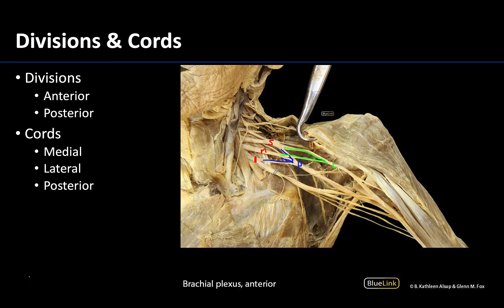When we get to the anterior division of the inferior trunk, it looks like a continuation of the inferior trunk, and that will form the medial cord — because recall the posterior division of the inferior trunk went the other way, while the anterior division just looks like a continuation. So you have a lateral cord, a posterior cord, and a medial cord in these regions.